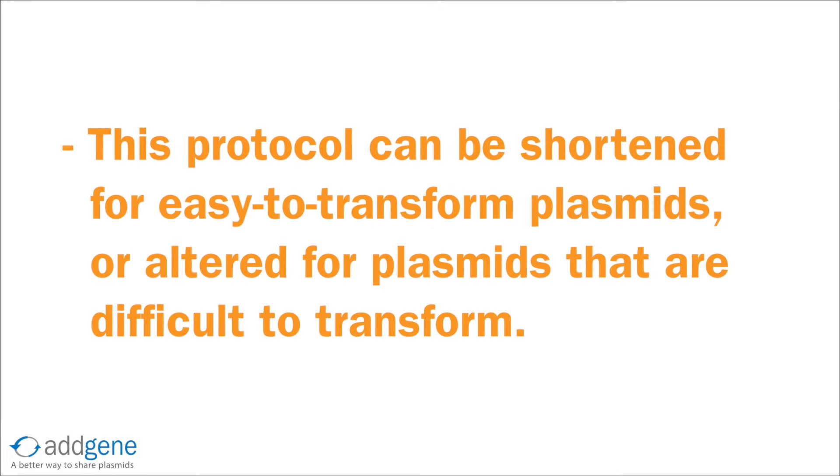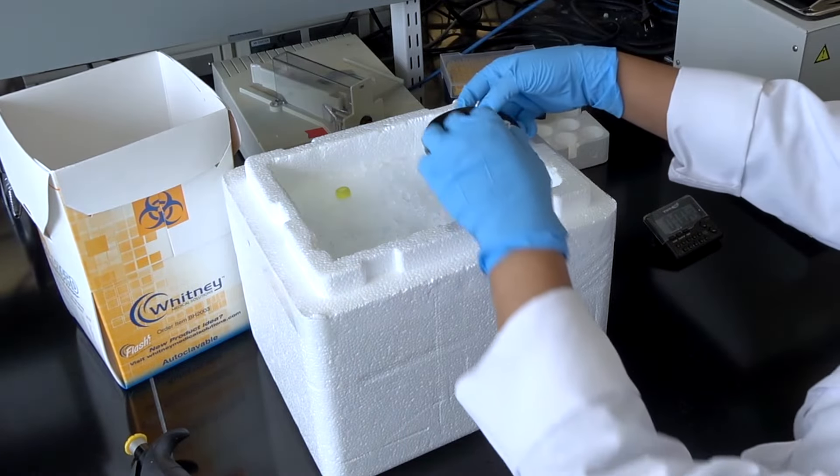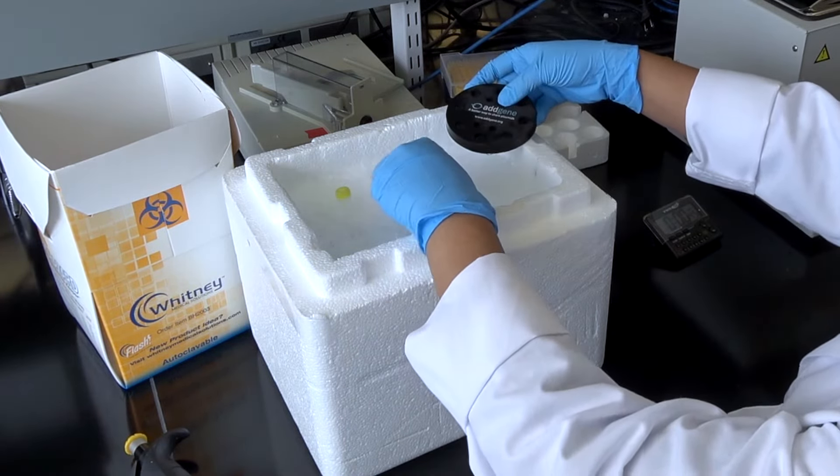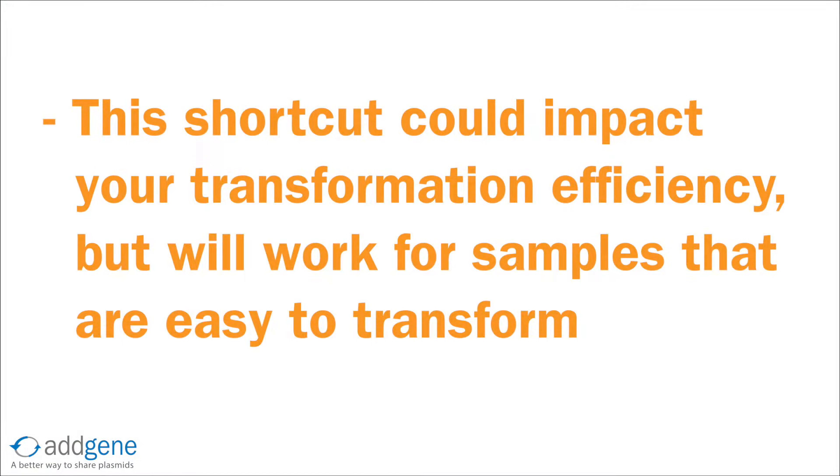Although this protocol will work for most plasmids, it can be shortened for easy to transform plasmids or altered for plasmids that are difficult to transform. If you want to significantly reduce the time needed for transformation, skip the heat shock and outgrowth steps entirely and simply incubate the DNA-competent cell mixture on ice for 5 minutes before plating. This could impact your transformation efficiency, but will work for samples that are easy to transform.